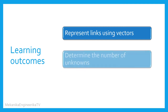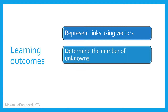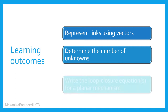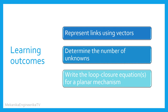Second, you will be able to determine the number of unknowns in the position analysis problem — you will be able to tell the size of the position analysis problem, and determine how many equations should be solved to define uniquely the position of the mechanism. Third, and last learning outcome, you will be able to write the required number of loop closure equations that, once solved, give a complete and unique definition of a planar mechanism's position.